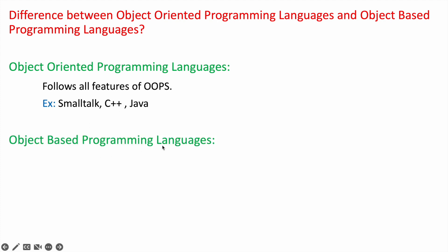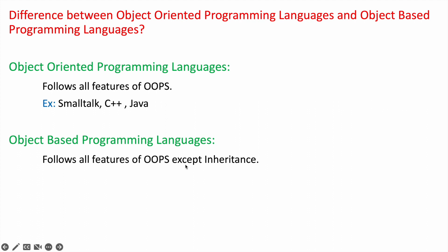Object-based programming languages follow all features of the object-oriented programming system except inheritance. Examples of object-based programming languages are JavaScript and VBScript. Now, what are the object-oriented programming system features?